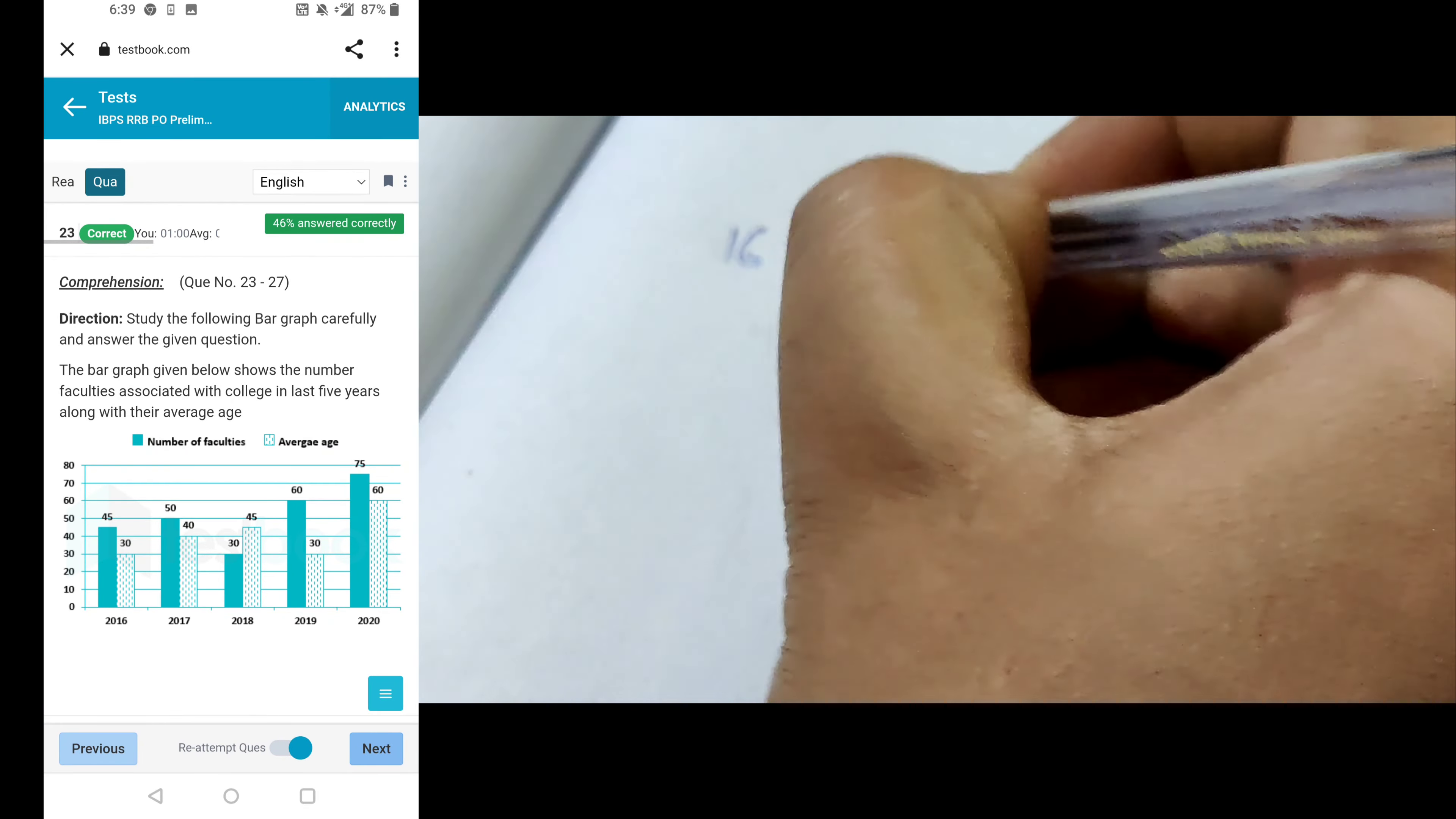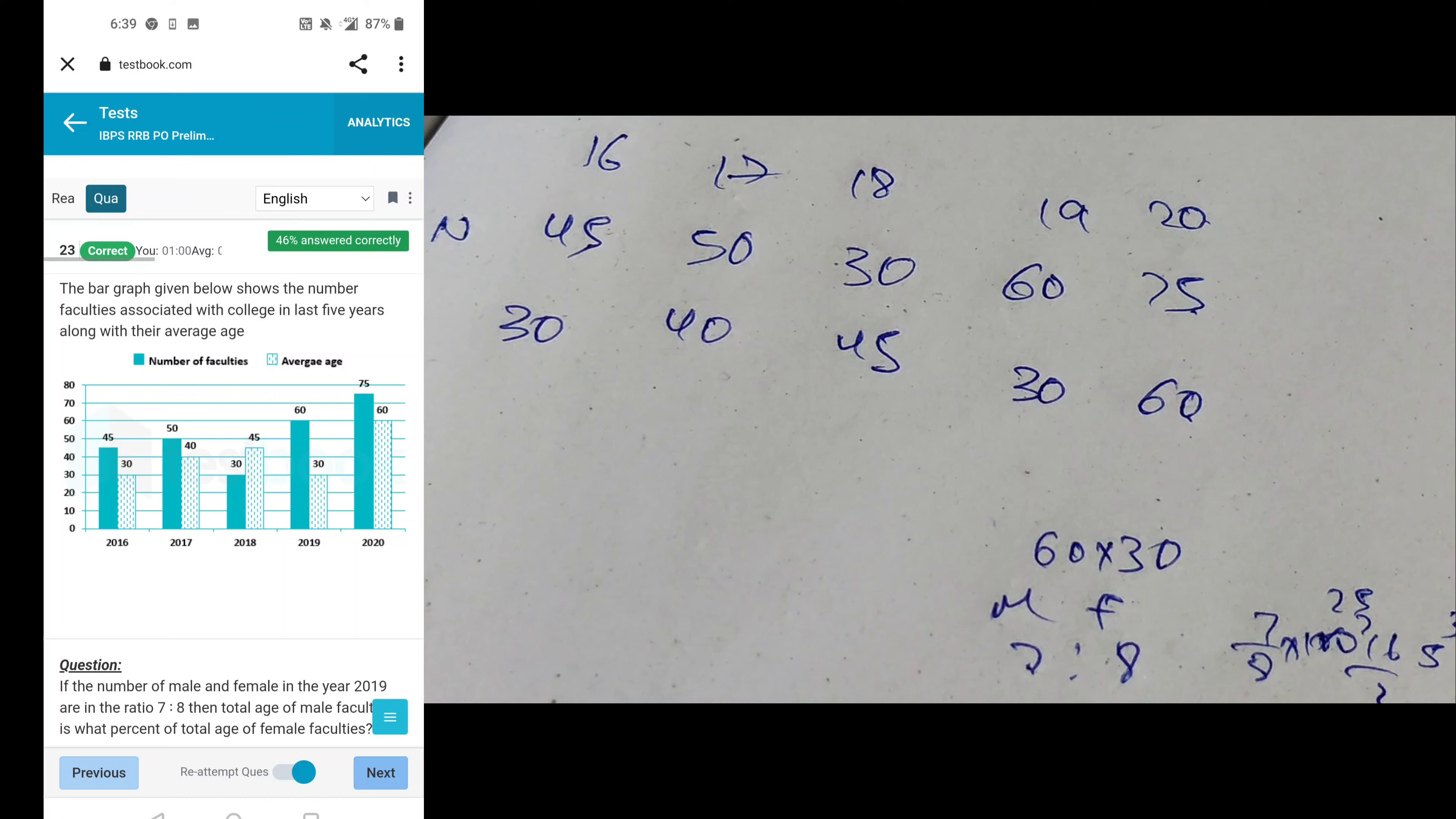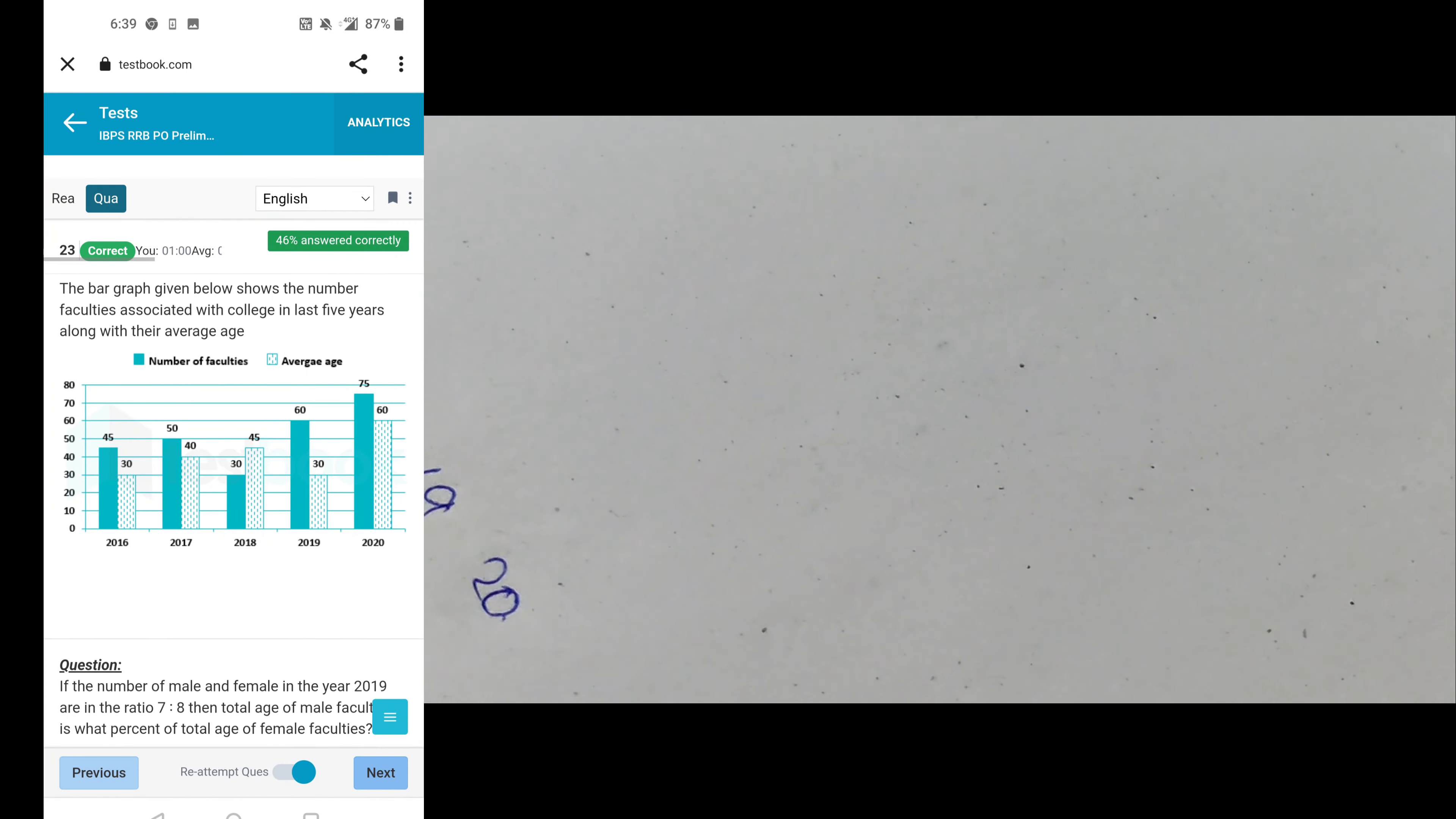Next, years 16, 17, 18, 19, 20, number of faculties 45, 50, 30, 60, 70. The average is 30, 40, 45, 30, 60. If the number of male and female in year 2019 in the ratio 60 to 7 students, male faculty one person, female faculties 70, 18 to 100 is 25 by 2, that's 80. So 87.5.